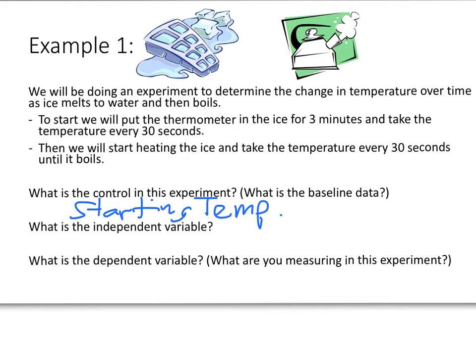What's the independent variable? Well, the thing that we're changing or measuring here is every 30 seconds. Because time doesn't get determined by anything else. So in this case, the independent variable is going to be time. And then what's the dependent variable? What are we measuring in this experiment? Any ideas? Well, in this case, it's the temperature.